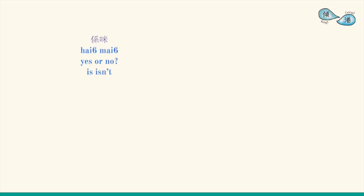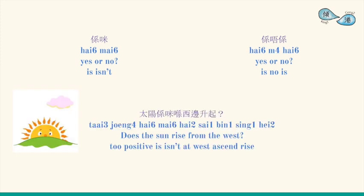是不是 — 是 means 'yes', while 不是 is actually the short form for 唔係, which means 'no'. For example: 太陽係咪係西邊升起? (Does the sun rise from the west?)